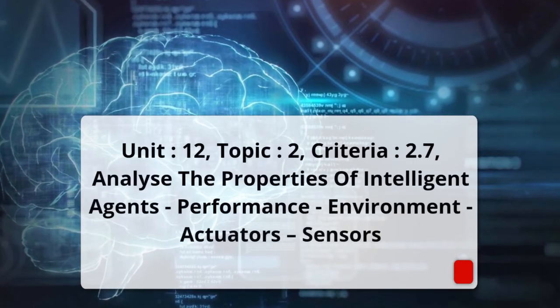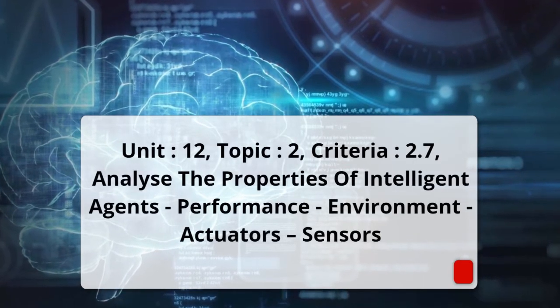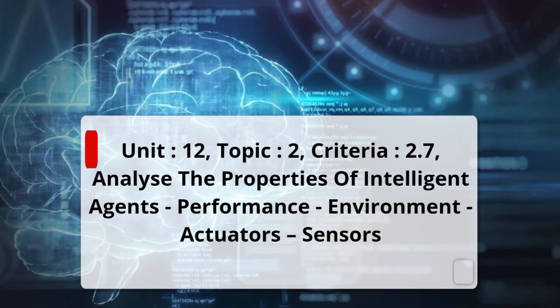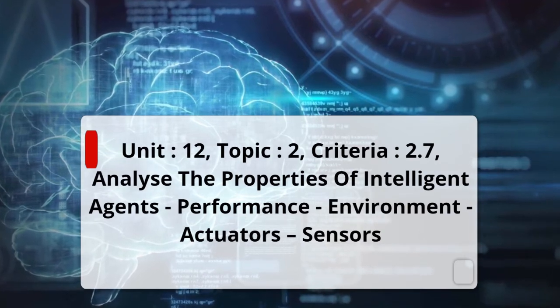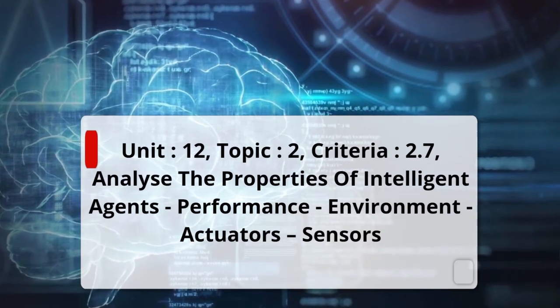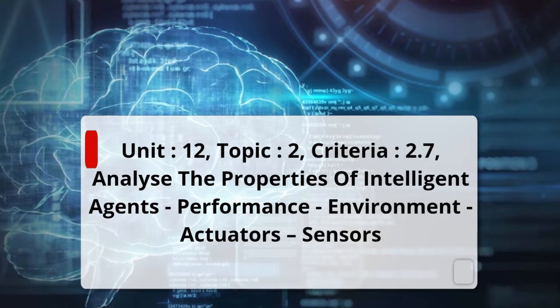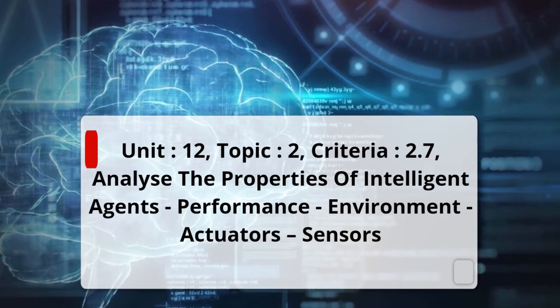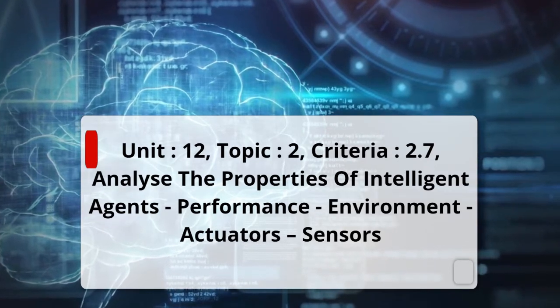Unit 12, Topic 2. Criteria 2.7: Analyze the Properties of Intelligent Agents — Performance, Environment, Actuators, Sensors.